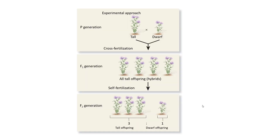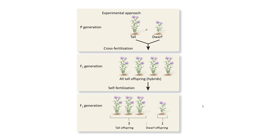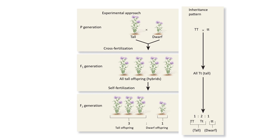He crossed tall and dwarf plants. All offspring in the F1 generation were tall because tall is dominant to dwarf. They all had a heterozygous genotype, receiving one allele from each parent. He then crossed these F1s to get F2s, which showed a three-to-one ratio of tall to dwarf offspring. Some tall offspring were homozygous for the tall allele, some were heterozygous, giving a 1:2:1 genotype ratio and a 3:1 phenotype ratio.